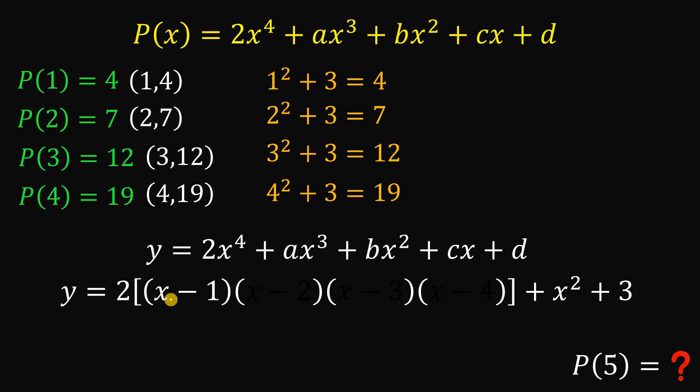So when you plug in x equals 1, 1 minus 1 is 0, so the whole thing becomes 0. And the other factor simply equal to x minus 2. So again, when you plug in x equals 2, this term becomes 0. So this is just 2 squared plus 3. So the last two factors simply equal to x minus 3 and x minus 4.